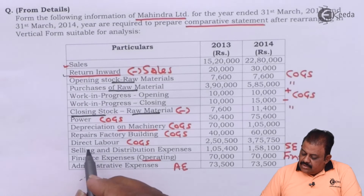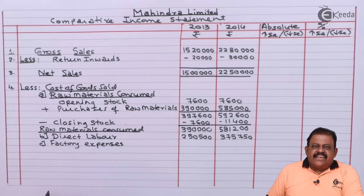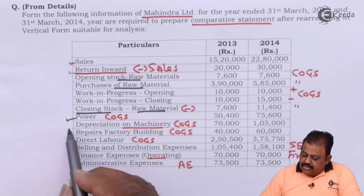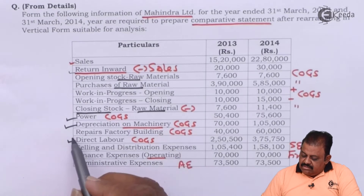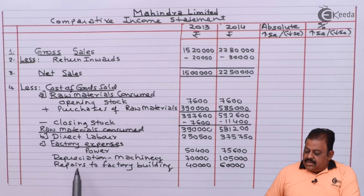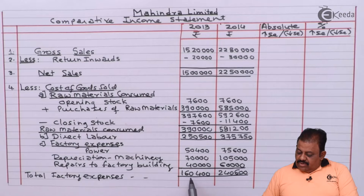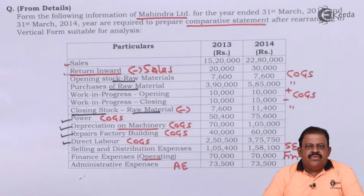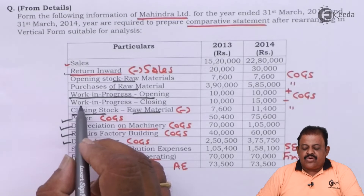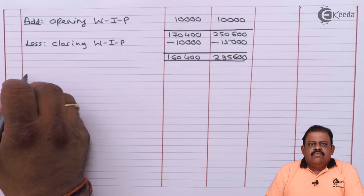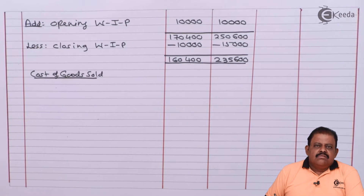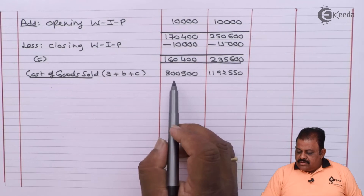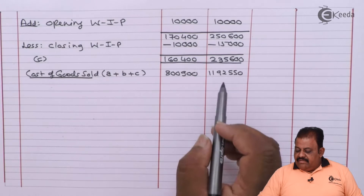To raw materials consumed we add direct labor, then factory expenses — power, depreciation on machinery, and repairs to factory building — giving total factory expenses of 1 lakh 60,400 and 2 lakh 40,600. We also add opening stock of work in progress and deduct closing stock of work in progress. Cost of goods sold comes to 8 lakh 900 and 11 lakh 92,550.